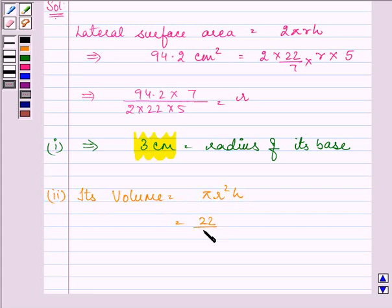That will be (22/7) × r² × h, which equals (22/7) × 3² × 5. So the answer comes out to be